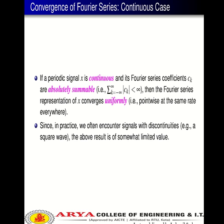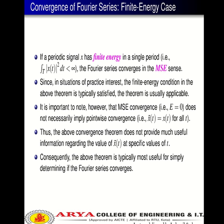If a periodic signal X is continuous and its Fourier series coefficients Cₖ are absolutely summable — that is, Σ(k=−∞ to +∞) |Cₖ| < ∞ — then the Fourier series representation of X converges uniformly, that is, pointwise at the same rate everywhere. Since in practice we often encounter signals with discontinuities such as a square wave, this result is of somewhat limited value.